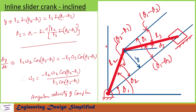We have seen that y = L2 sin(theta 2 − theta 1) = L3 sin(theta 1 − theta 3). Differentiating this equation with respect to time: dy/dt gives L2 · omega 2 · cos(theta 2 − theta 1) = −L3 · omega 3 · cos(theta 3 − theta 1). From this equation we can write omega 3, the angular velocity of the coupler link, as omega 3 = L2 · omega 2 · cos(theta 2 − theta 1) / [L3 · cos(theta 3 − theta 1)]. Using this equation we can find the angular velocity of the coupler link.